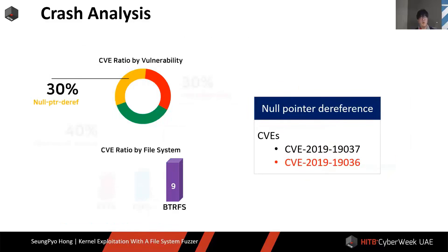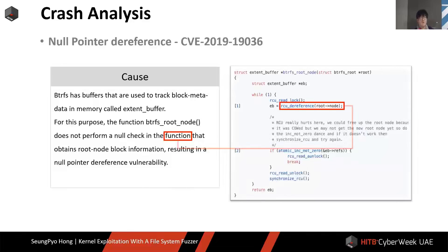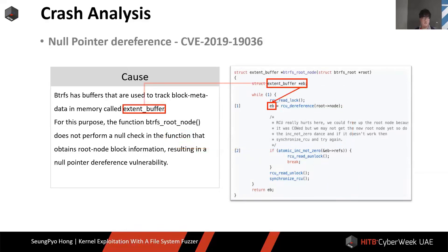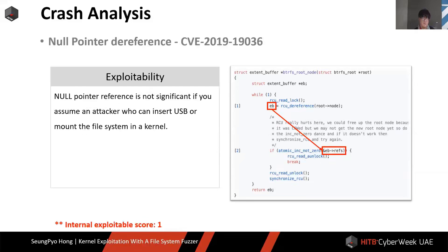Next, CVE-1936 vulnerability. The btrfs_root_node function is a function to safely get the root node of a tree. This is a null pointer dereference vulnerability that occurs when the return value of the rcu_dereference function is null, in the extent_buffer structure pointer eb — it cannot dereference the location of eb. Since this vulnerability is also a null pointer dereference, we gave it one point internally.